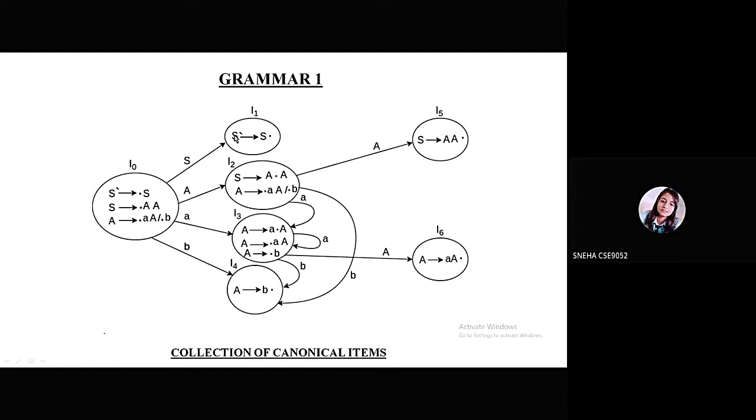We are writing S' tends to S dot. We are shifting the dot, and since there is no terminal or non-terminal present, this is an end state. For input A, we are going to I2 and writing the production. After shifting the dot, we see that there is a non-terminal A. So for the closure of A, we have to write the production of A as well from the I0 as it is.